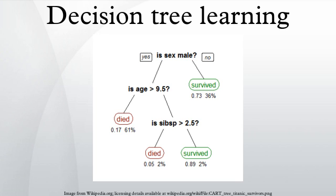A tree can be learned by splitting the source set into subsets based on an attribute value test. This process is repeated on each derived subset in a recursive manner called recursive partitioning. The recursion is completed when the subset at a node has all the same value of the target variable, or when splitting no longer adds value to the predictions. This process of top-down induction of decision trees is an example of a greedy algorithm, and it is by far the most common strategy for learning decision trees from data. In data mining, decision trees can also be described as the combination of mathematical and computational techniques to aid the description, categorization and generalization of a given set of data.